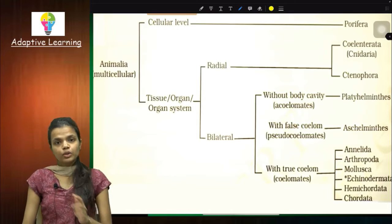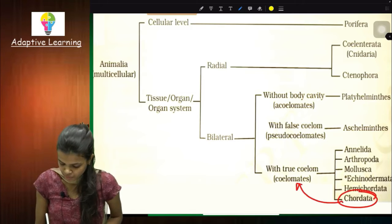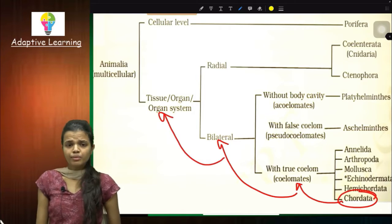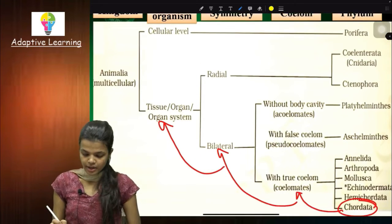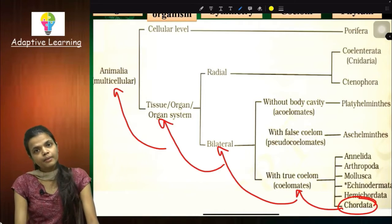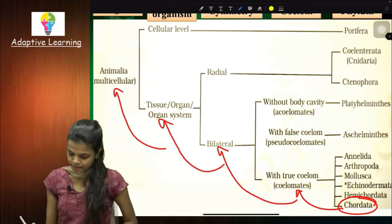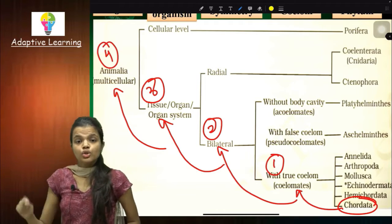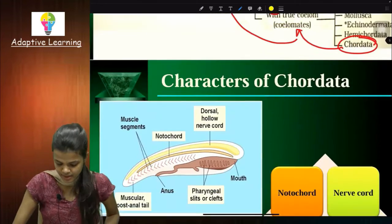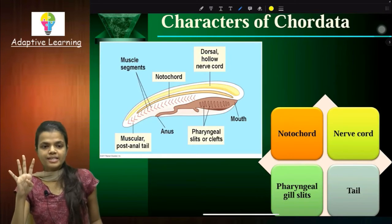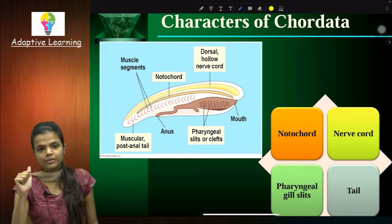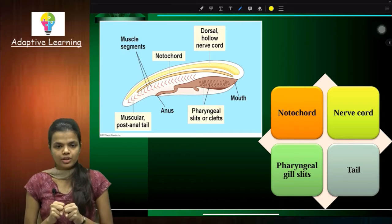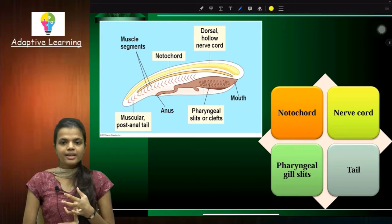Today we are learning Phylum Chordata. To understand it, let's go to the table. Chordata are coelmates — meaning they have a true body cavity. They are bilaterally symmetrical and show a cellular level of organization. They are from Kingdom Animalia and are multicellular. So that gives us four characteristics. Now the next four characteristics are very specific to chordates. Chordates have four distinct features.